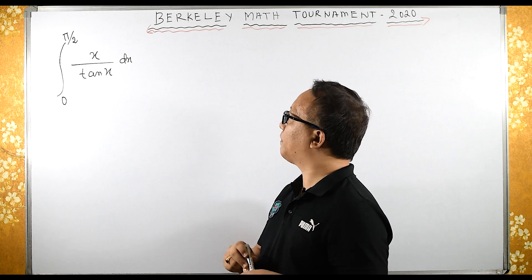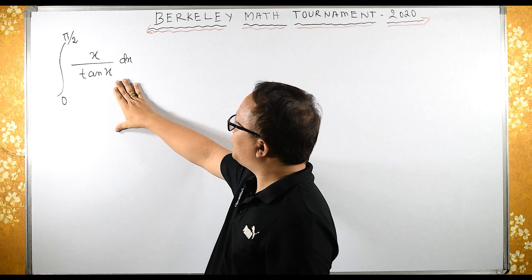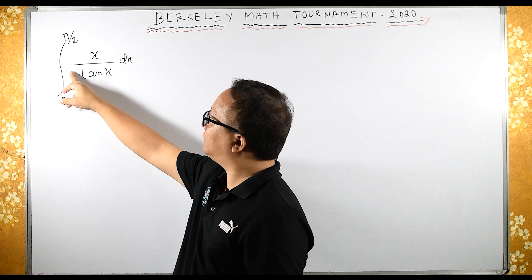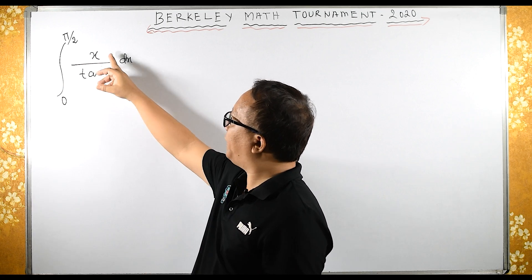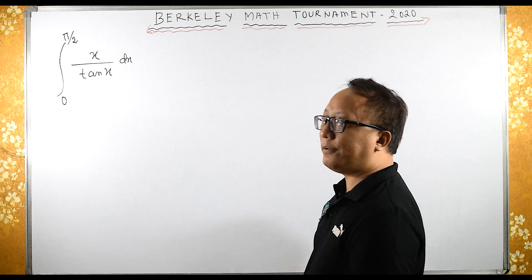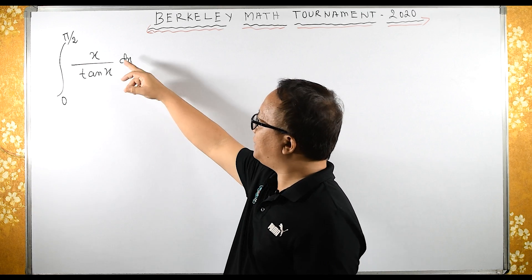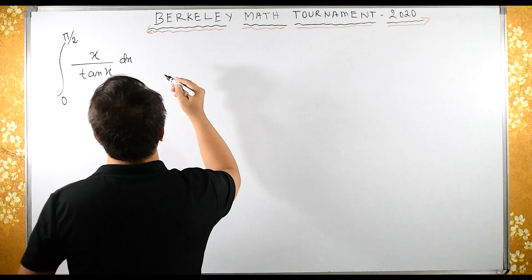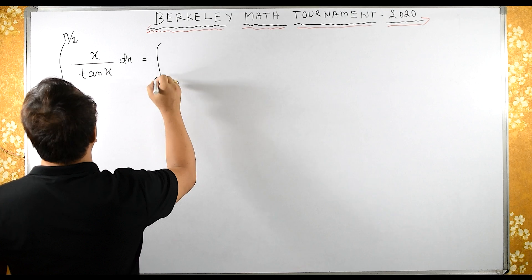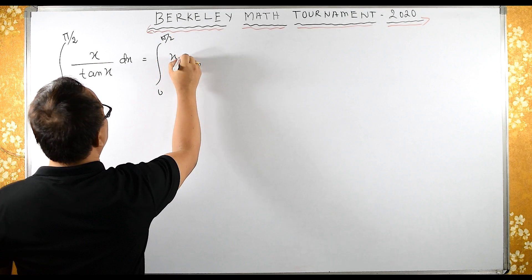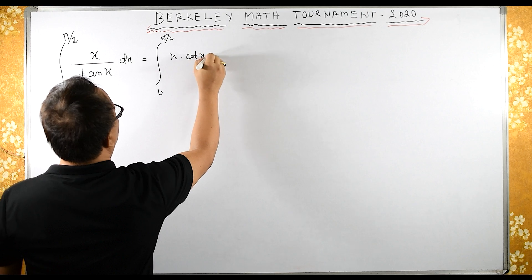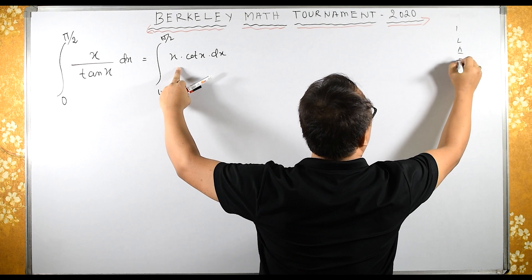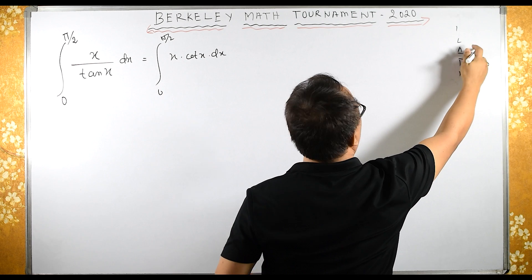This integral looks somehow hard. What we can do is solve it either by differentiating under the integral sign or by integration by parts. I will solve this by integration by parts. I will convert 1/tan as cot and then apply integration by parts. So this equals the integral from 0 to π/2 of x times cot x dx.